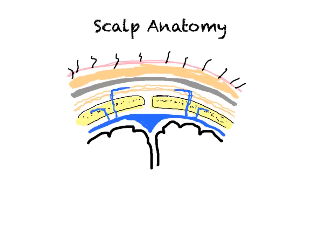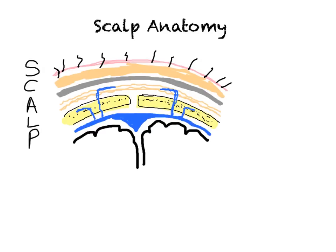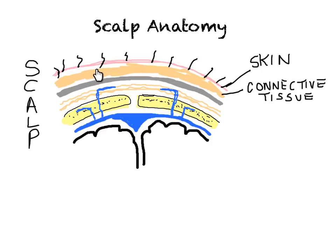The five layers of the scalp are easy to remember using the mnemonic SCALP. The first layer is the skin. The second layer is connective tissue. This layer of connective tissue is dense and closely adherent to the skin above and the epicranial aponeurosis below. Essentially these three layers function as one. The blood vessels and nerves of the scalp are present in the dense connective tissue layer.